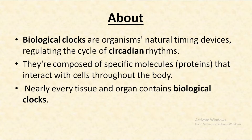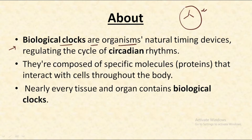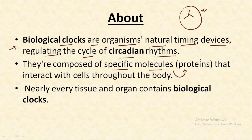Biological clocks in simple words means a regulated, time-mannered sequence of events that is happening in our body. We can say that biological clocks are organisms' natural timing devices that are regulating the cycle of the circadian rhythms. They are composed of specific molecules, and these molecules are majorly proteins that interact with the cells throughout the body.